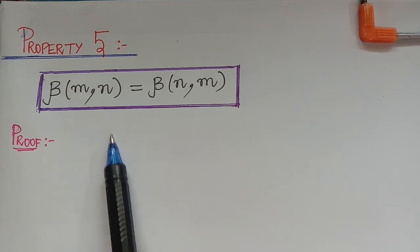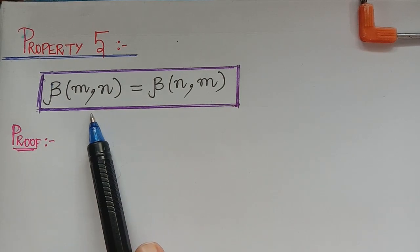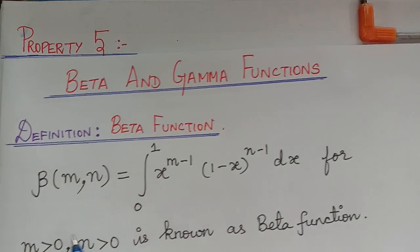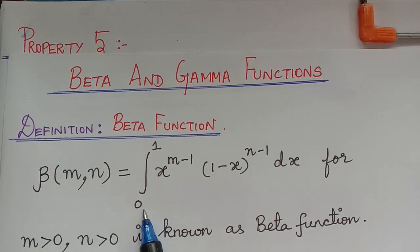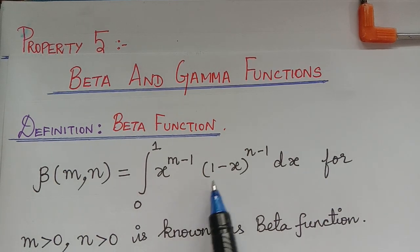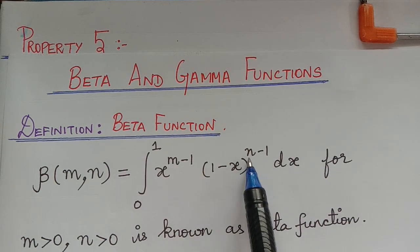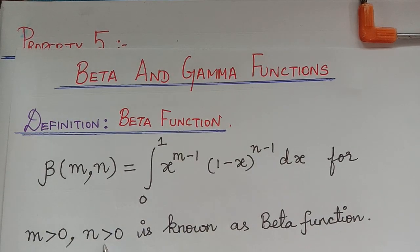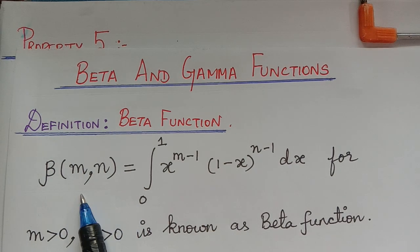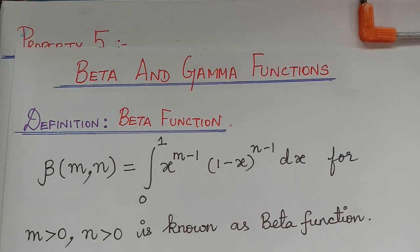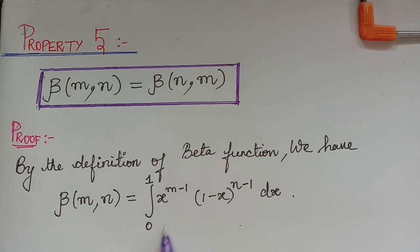First of all, by the definition of beta function, we know that beta of m, n is equal to integral 0 to 1, x to the power m minus 1 multiplied with 1 minus x to the power n minus 1, dx, for m and n greater than 0. So the first step is to write this definition.